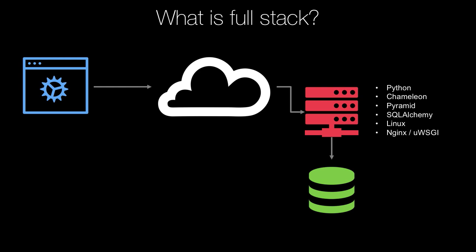Then we're going to talk to the database. What do you need to know for that? Maybe this is Postgres or MongoDB. For the course, we're actually going to use SQLite and also a little touch of MongoDB at the end, but it's easy to switch to something like Postgres. You may need to know the query language to get to that, like SQL or MongoDB's query syntax. We're not going to focus much on the query syntax because we're going to use SQLAlchemy, which lets us abstract that away. You also need to know how to migrate or manage your database over time as its structure changes.